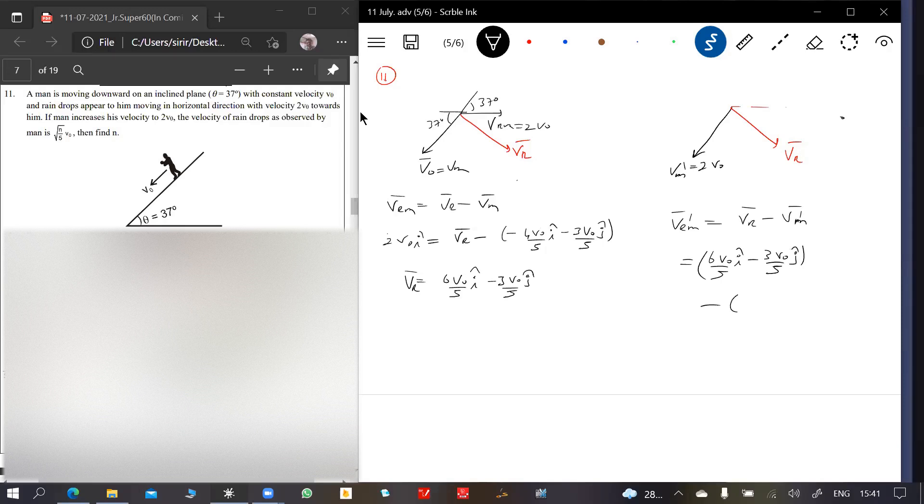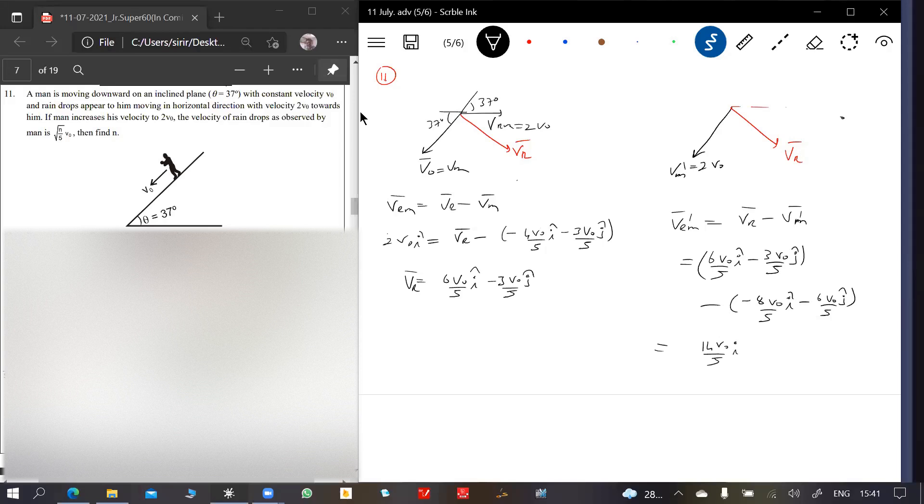V m dash is two times of it, so this will be minus 8 v naught by 5 i cap. 6 v naught plus 8 is 14 v naught by 5 i cap, minus 3 minus 3 plus 6 will be plus 3.